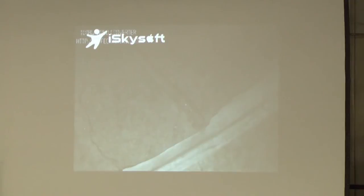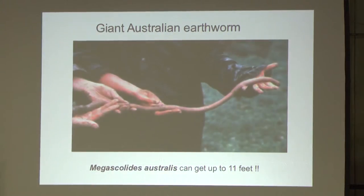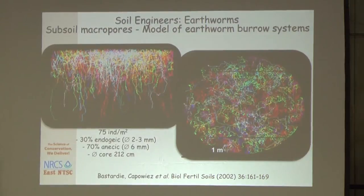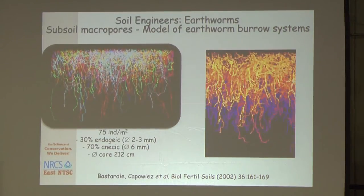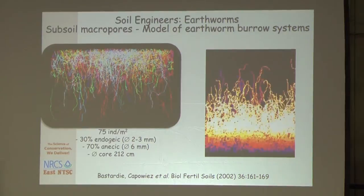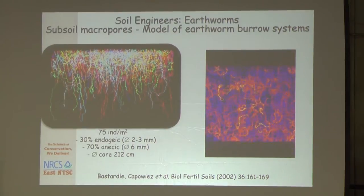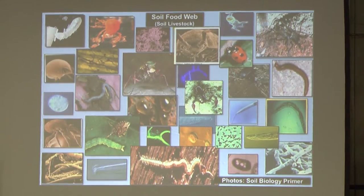Look at how earthworms modify the environment. These are the factory workers — they do everything. And a critical principle: plant and soil are one. They are not separate units. One night I was reading a research paper and came out of the house screaming, 'I get it — plant and soil are one!' As soon as your crop is up, that soil must be covered 24/7.